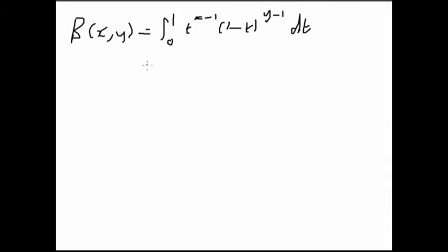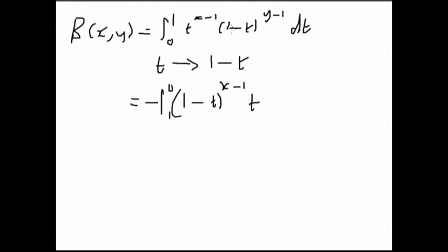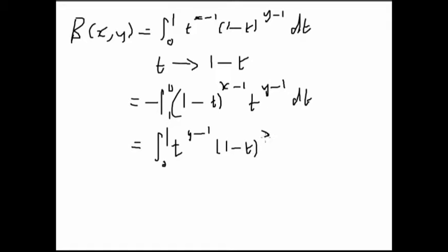This is symmetric. If I substitute t → 1-t, then the limits go from 0 to 1 (since 1 minus 0 is 1), giving (1-t)^(x-1) · t^(y-1). Swapping the limits negates the whole thing, so we're left with t^(y-1) · (1-t)^(x-1) dt. So we've shown that B(x,y) = B(y,x).